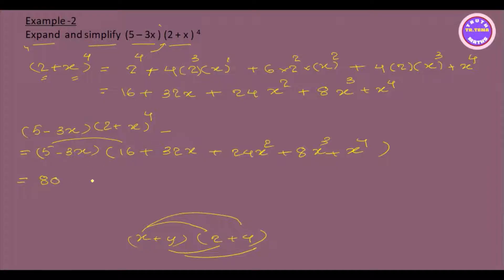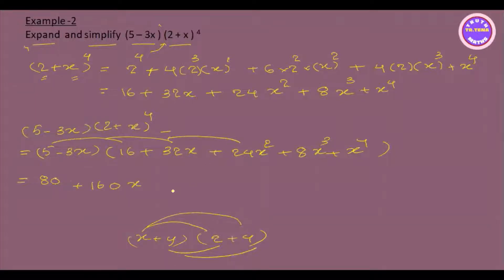So let's say 80, so the meaning of 5 and 32 is 0. Then the meaning of 5 and the meaning of 160 — 1 and 6 are actually plus. So 5 is not equal to 24, and 5 is equal to 0. So 5, and the meaning of 6 is equivalent to 120x squared.